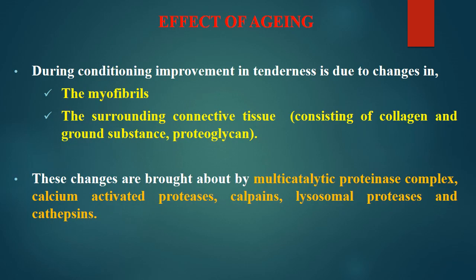During conditioning, improvement in tenderness is due to changes in myofibrillar proteins — especially actin and myosin — and also action at Z-line proteins and gap filaments. There is also change in connective tissue composed of collagen fibers and the ground substance like proteoglycan. These changes are brought about by several kinds of enzymes: multi-catalytic proteinase complex, calcium-activated proteases (calpains), and lysosomal proteases and catheptic enzymes. This is the summary of the enzymes involved in aging and where they act.